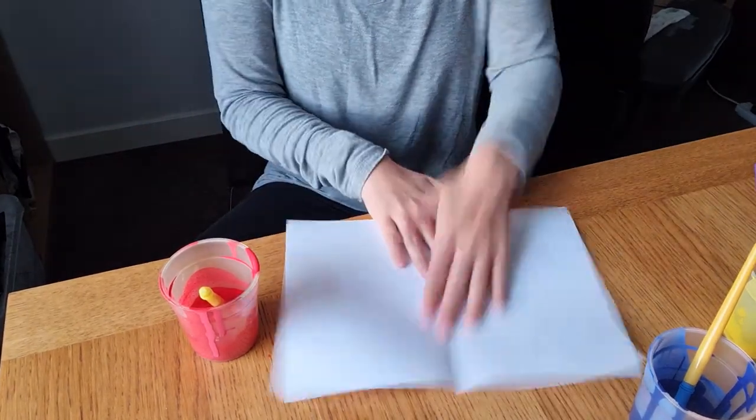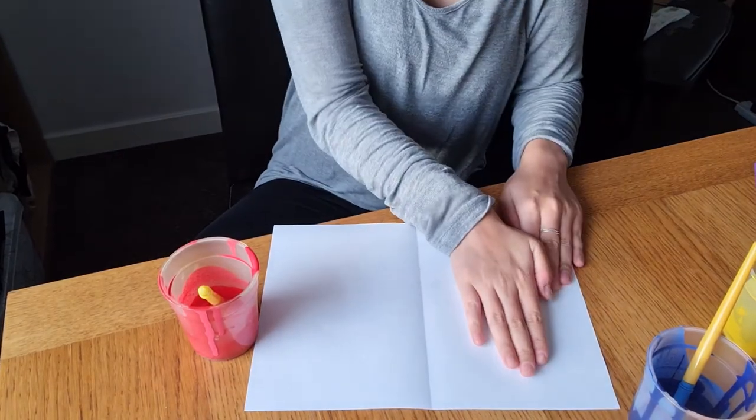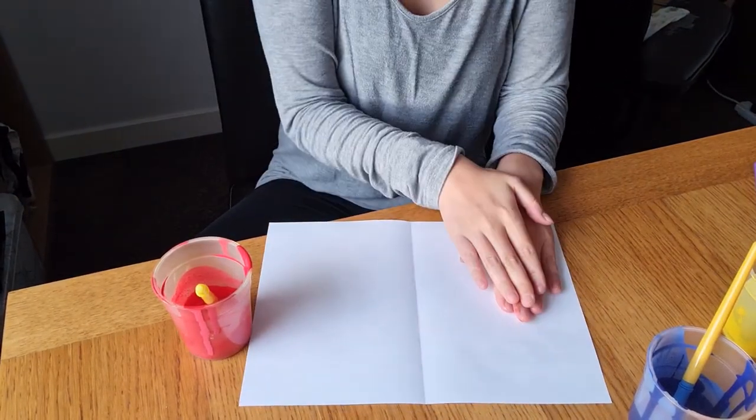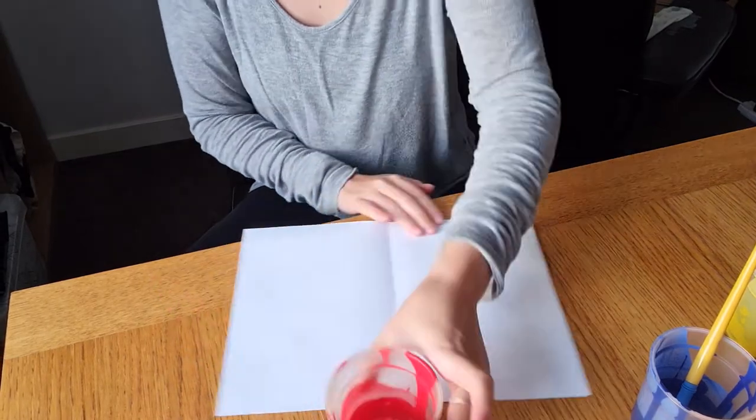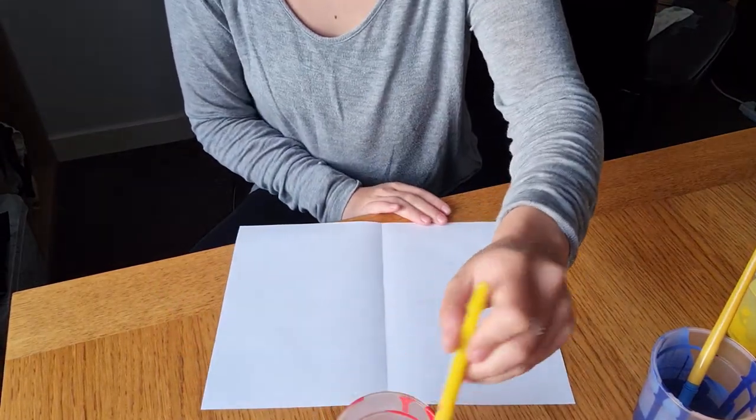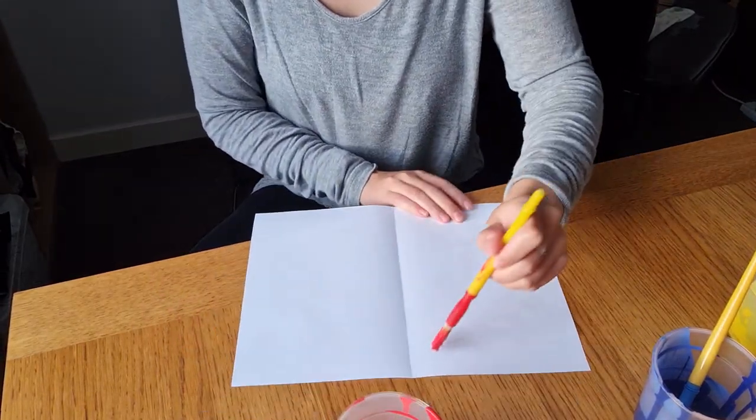Then when you open it up, you only paint on one side of the paper. You can do it on this side if you want or the other, but as long as it's only on one side. When you fold it again, it'll work fine.